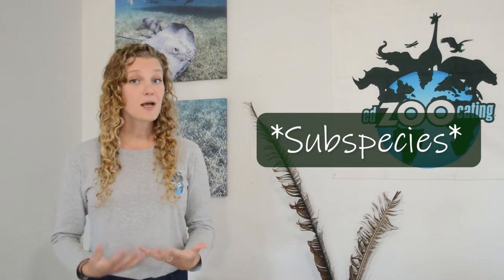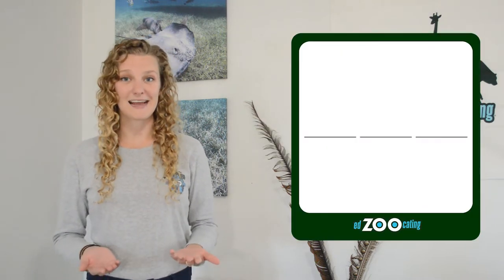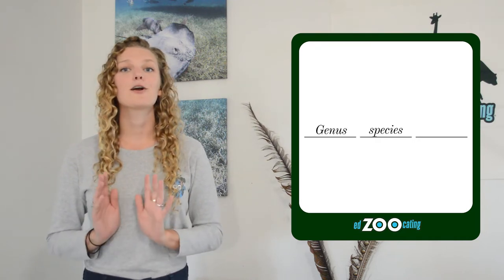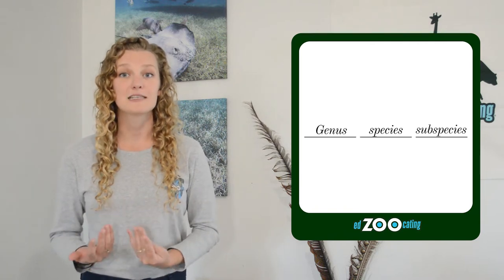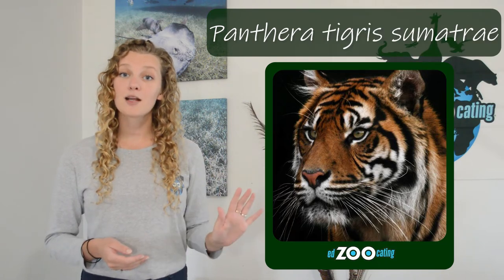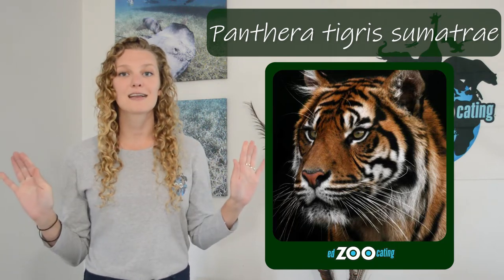If we're talking about a subspecies, which is an even smaller group of organisms, there are actually going to be three words in the scientific name: the genus, then the species name, and then the subspecies name. So for a Sumatran tiger, a subspecies of tiger, I would write Panthera tigris sumatrae, capitalizing the P in Panthera and writing the entire scientific name in italics. Now we've got the foundation for how to write a scientific name.